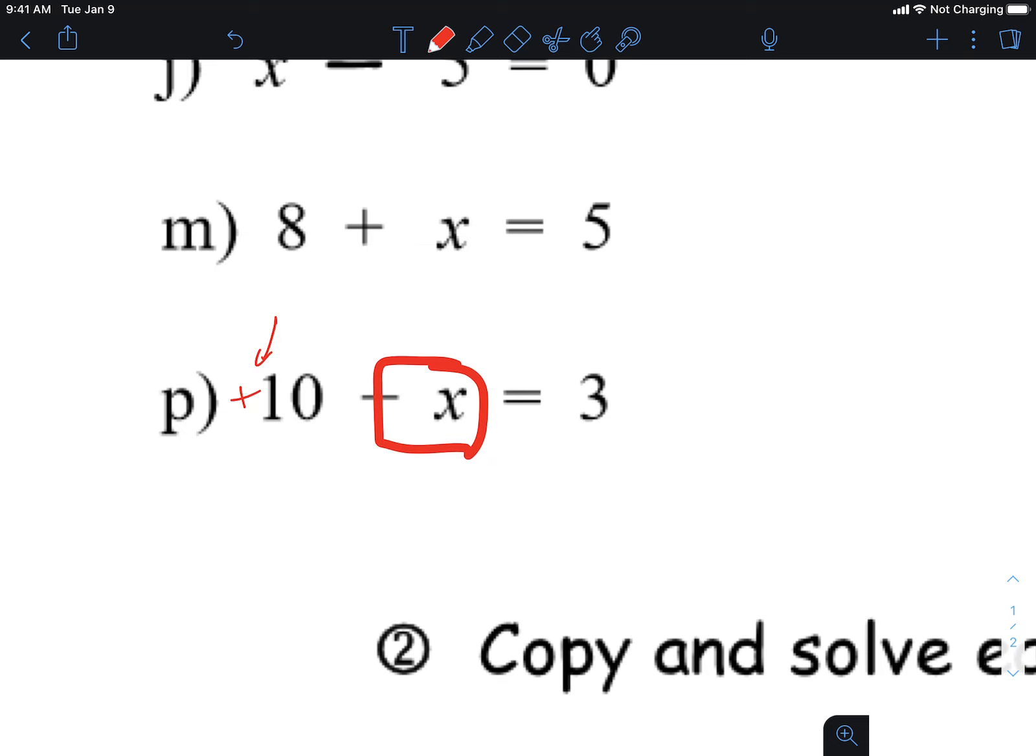Does everybody agree? Okay, so what's the opposite of adding 10? I'm gonna minus 10, but I got to do it to both sides, right? So x is equal to 3 minus 10.